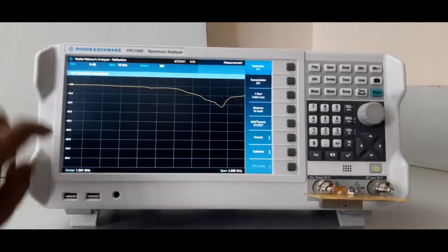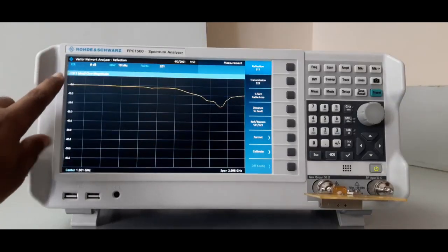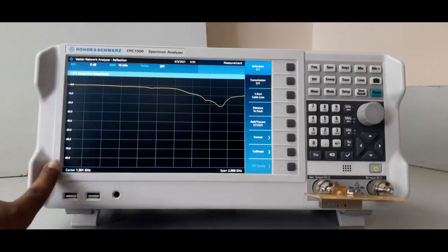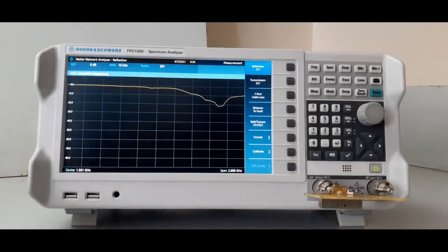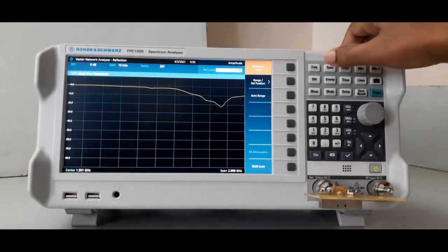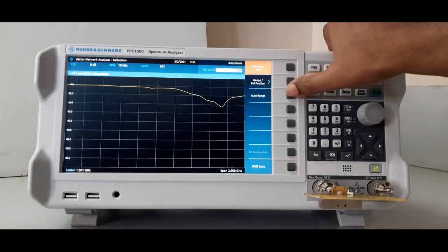Previously it is 0 to minus 80, the range is from here to here, 0 to minus 80. It looks like this. I will go to range, amplitude range, auto.